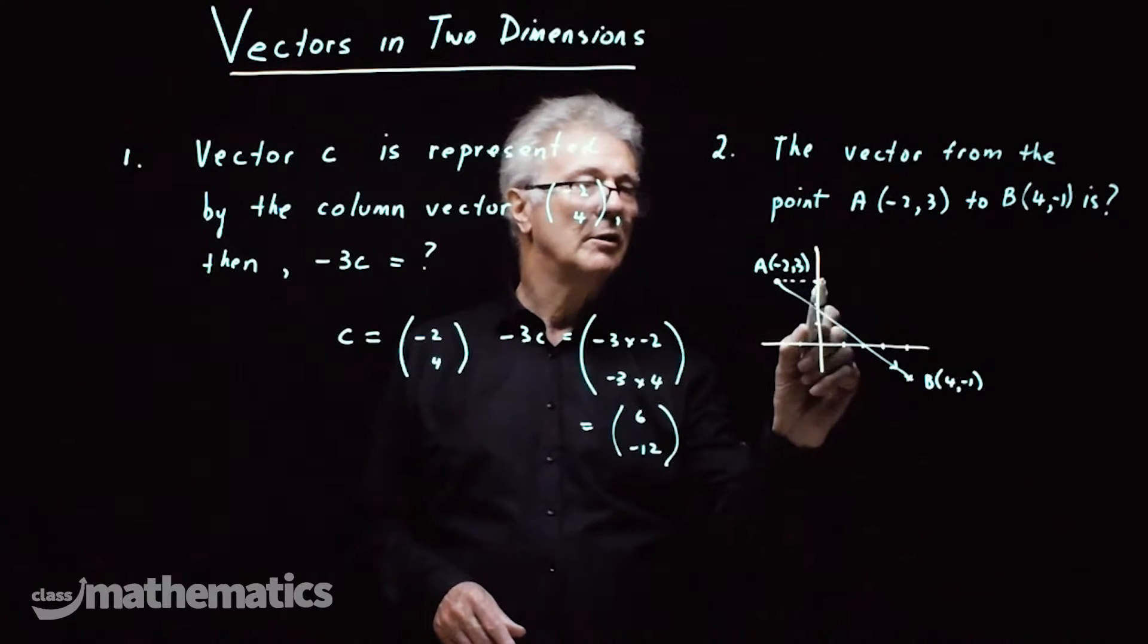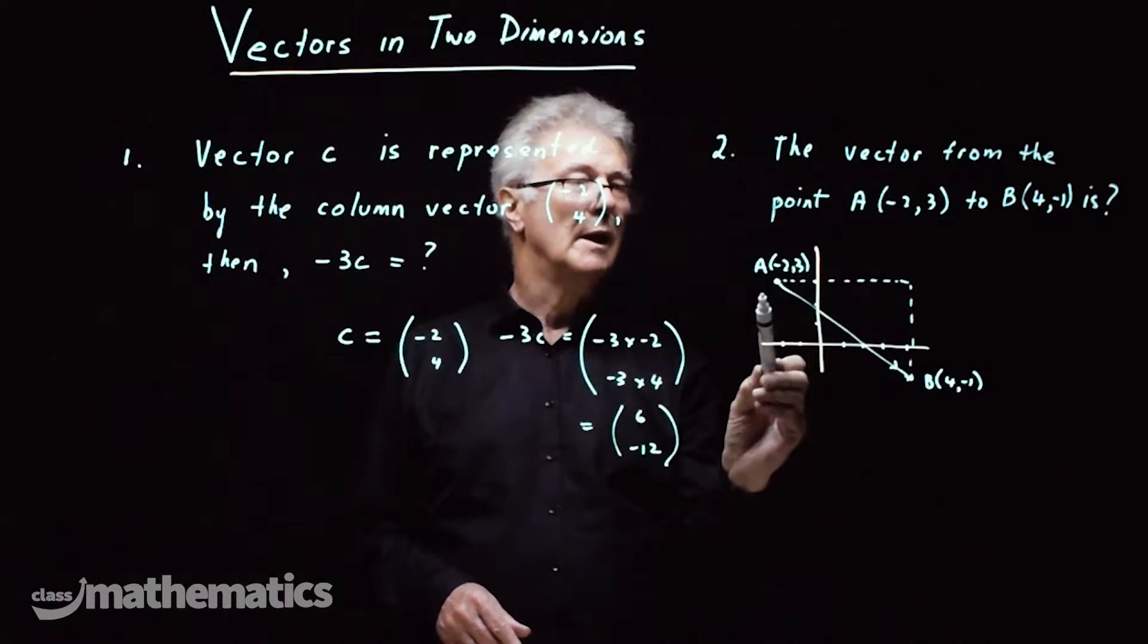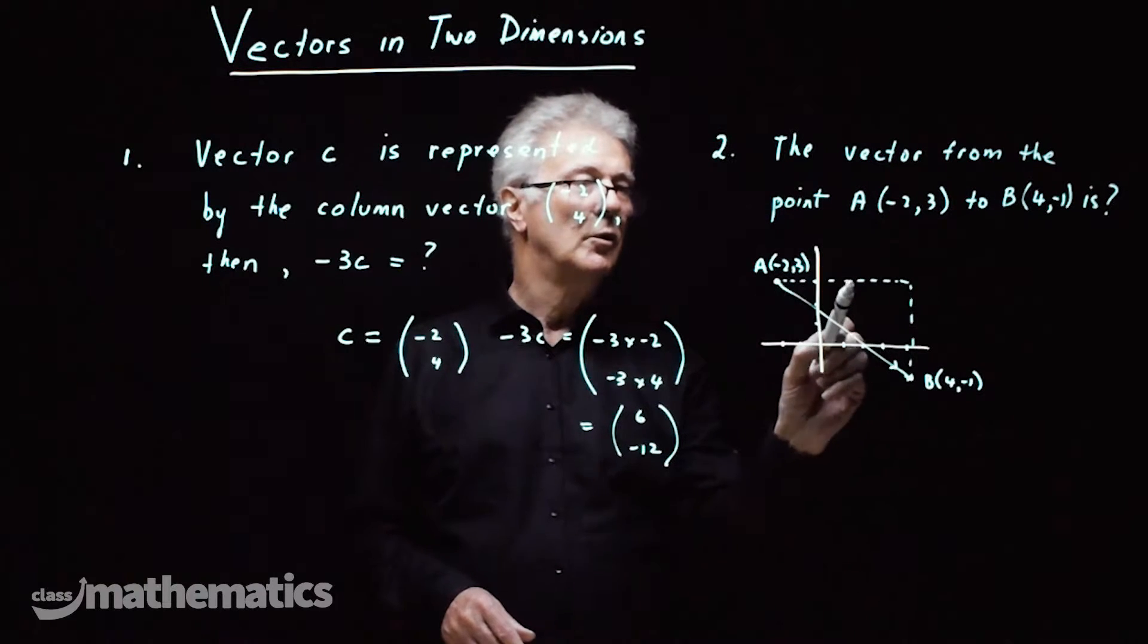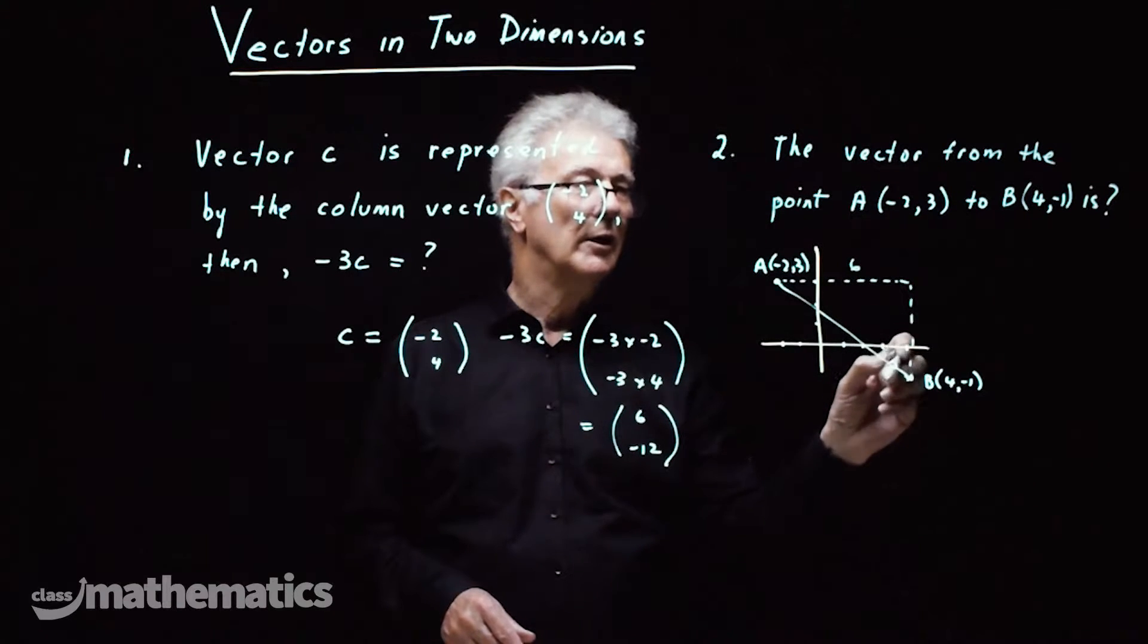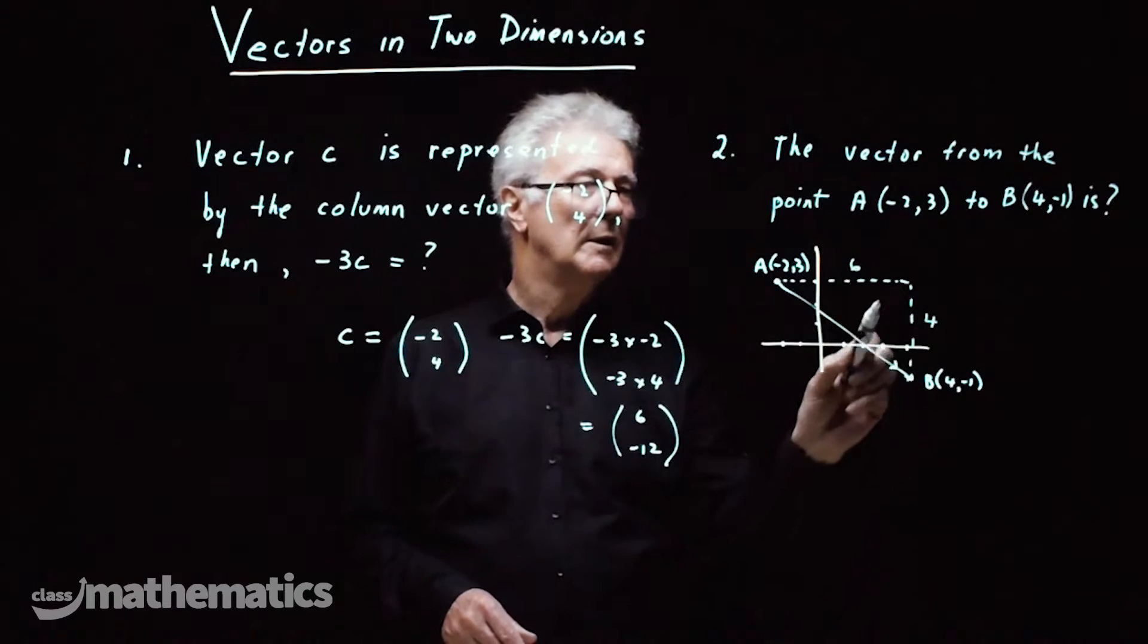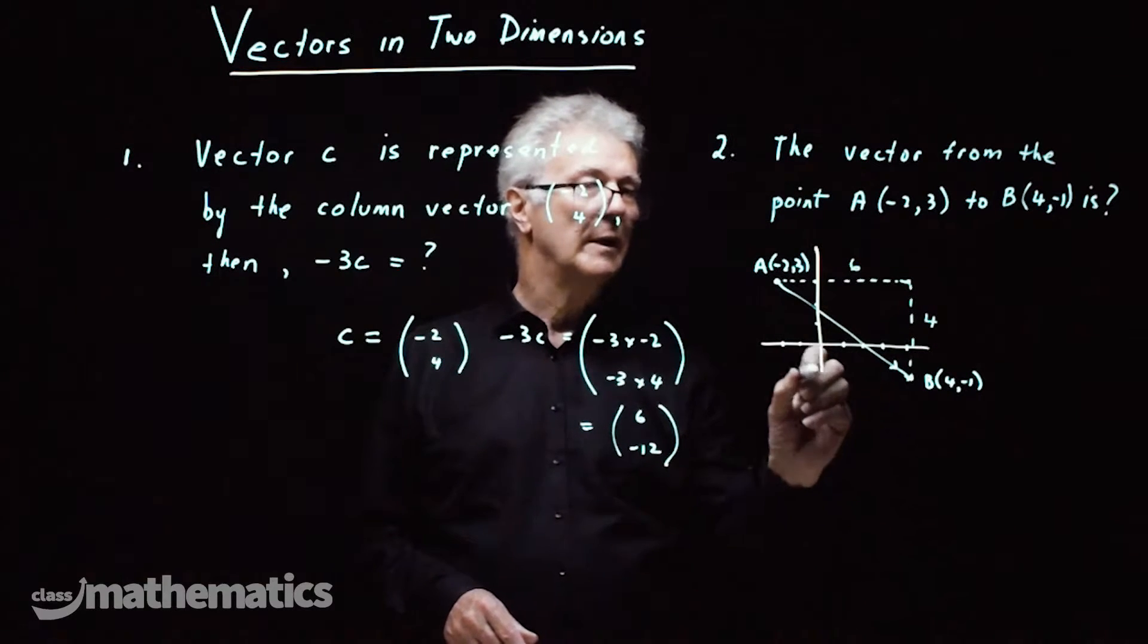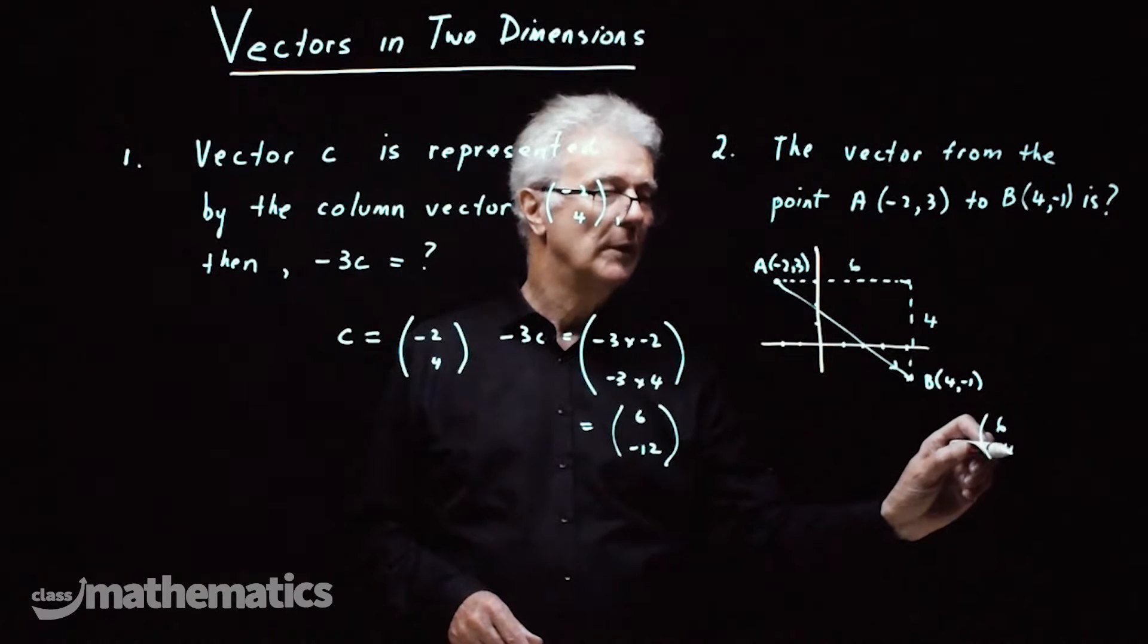So we'll just go across here and then go down, it's like a gradient really and it goes from minus 2 to 4, that's a total of 6 units and from there down to minus 1, that's a total of 4 units. So the vector AB would be simply 6, negative 4 as a column vector.